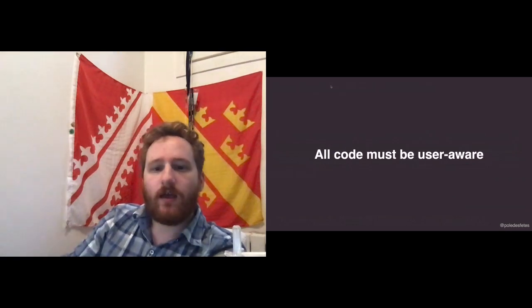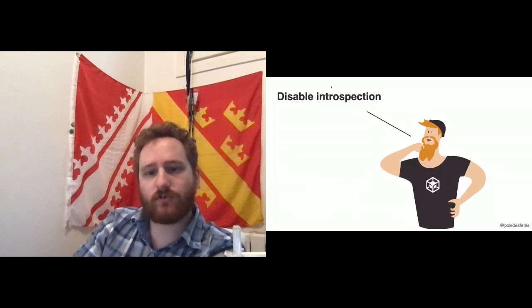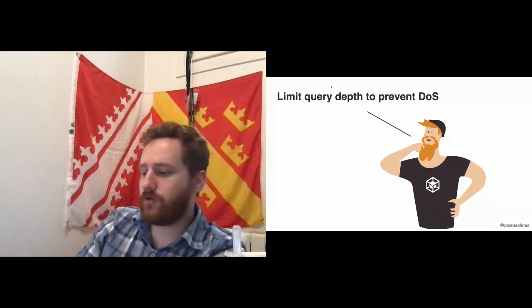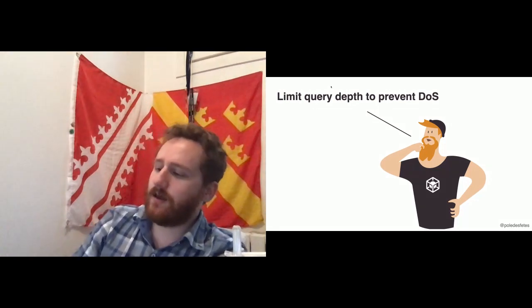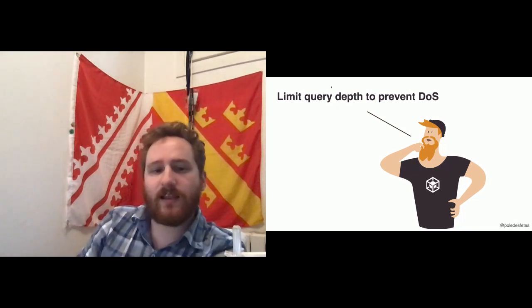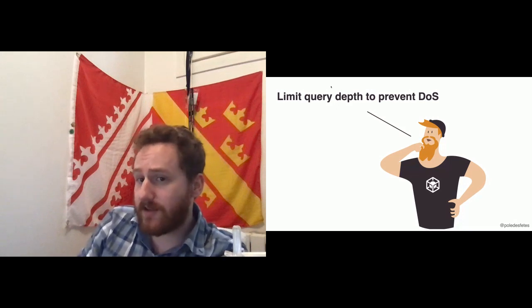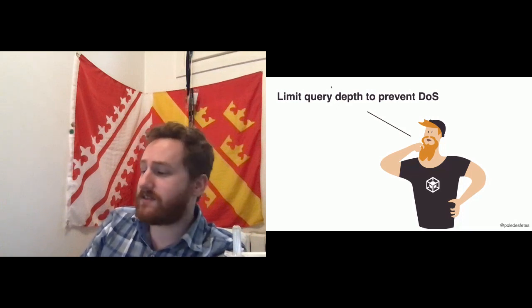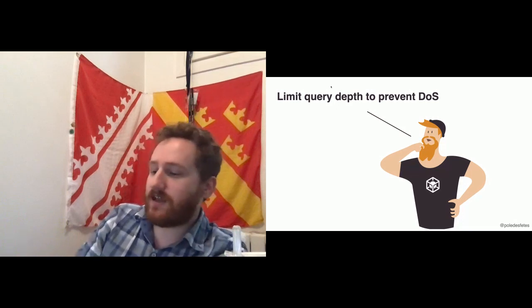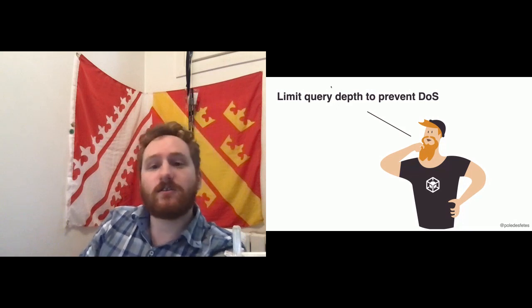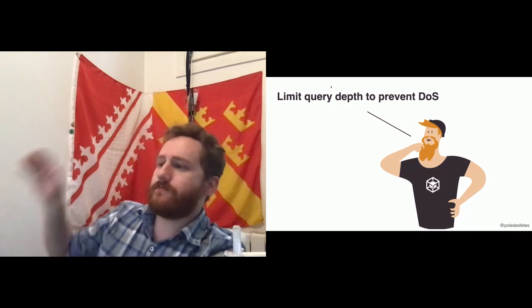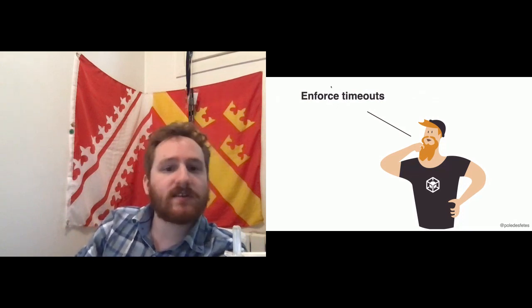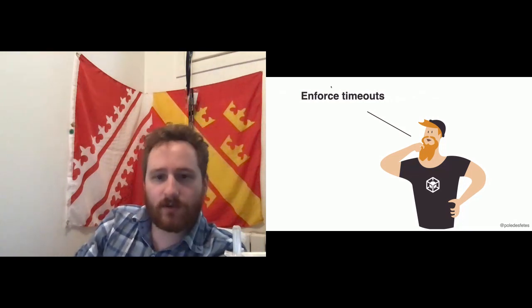To conclude: disable introspection — that was my first takeaway. Limit query depth to prevent DoS attacks. In a Node.js environment, which is single-threaded, a very slow GraphQL query blocks all requests. In a multi-threaded environment you can make the server unresponsive, and in an elastic environment you can just drive up costs for the API owner. Set query timeouts. If you want to see hacking around query depth and long responses, check my talk from last year at the OAS conference.